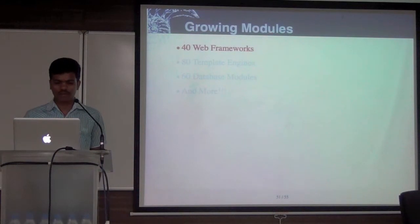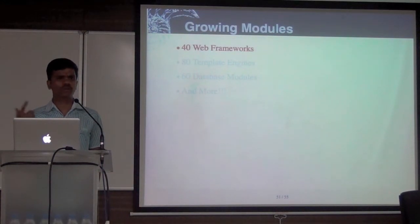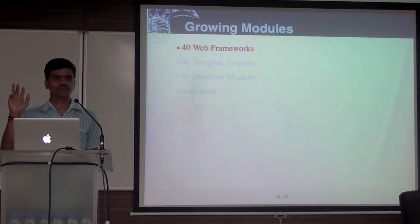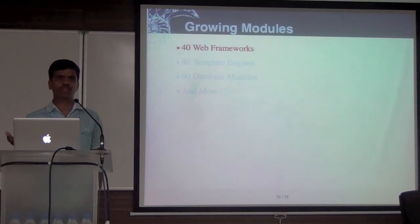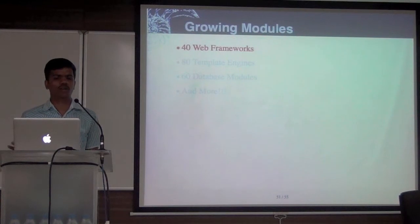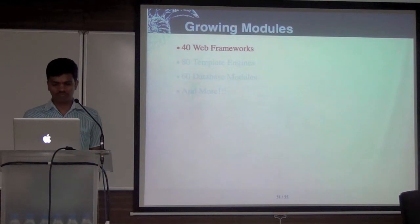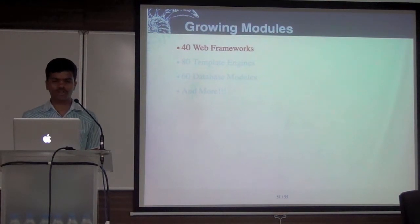Let's talk about modules available. In Rails, there are two to three web frameworks available — Ruby on Rails, Sinatra, all those. Java has J2EE and all those. But in the case of Node.js, there are 40 web frameworks available. That's because it's very simple and easy to extend, and a lot of people are building a lot of stuff.